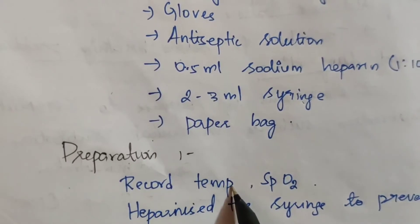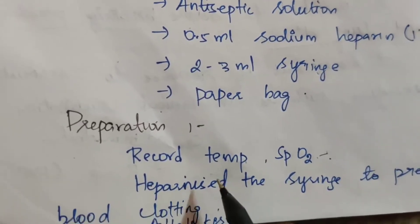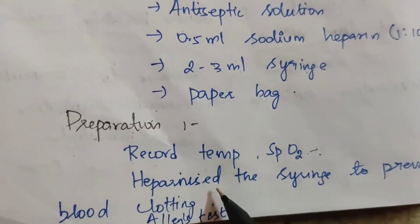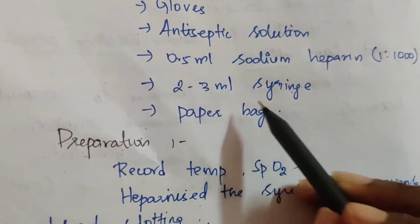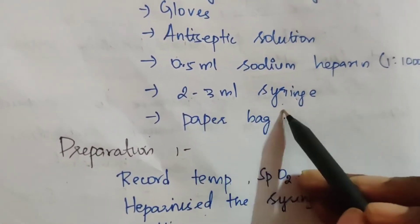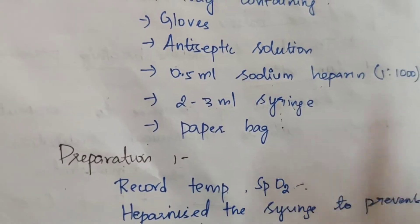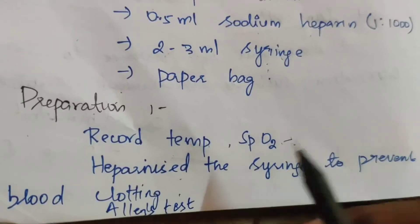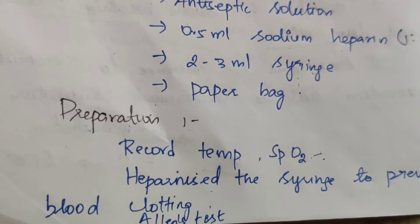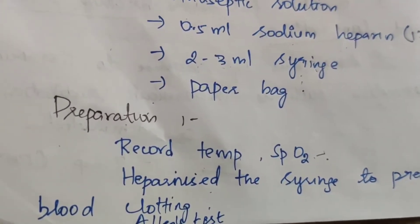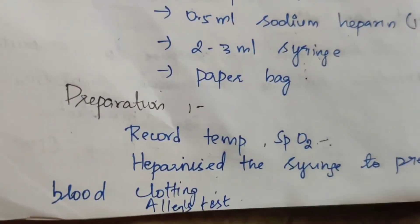Preparation: first, record the patient's temperature and SpO2 — oxygen saturation level. Then heparinize the syringe to prevent blood clotting. Use a 2-3 ml syringe. Draw heparin into the syringe and discard the excess. This coats the syringe with anticoagulant.